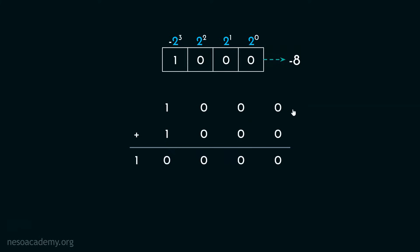Observe: these two negative 8's can be easily stored in 4-bit spaces, but that's not the case for negative 16. Negative 16 actually requires 5 bits. So the computer won't be able to store this value in a 4-bit register. Therefore, this carry will indicate the overflow.